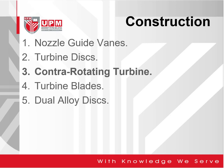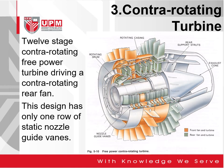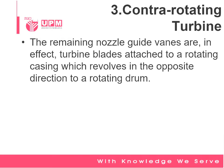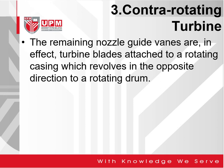The third component is the contrarotating turbine. Figure 510 shows a free power contrarotating turbine. The orange color section is the front fan and turbine, and the green color section is the rear fan and turbine. A 12-stage contrarotating free power turbine driving a contrarotating rear fan is shown here. The design has only one row of static nozzle guide vanes. The remaining nozzle guide vanes are in effect turbine blades attached to a rotating casing, which revolves in the opposite direction to a rotating drum.